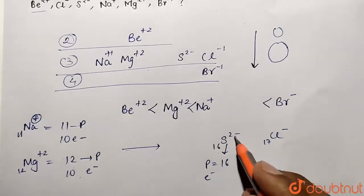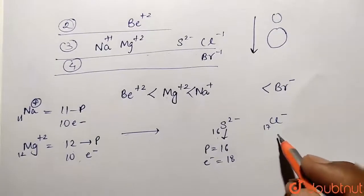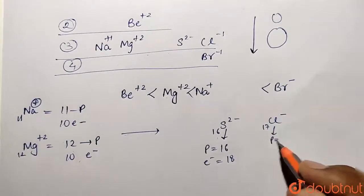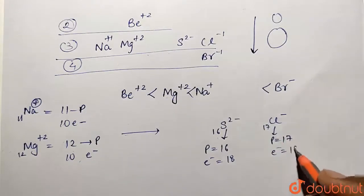Why? Because two extra electrons are there, so this is 18. Similarly, in chlorine ion also, number of protons is going to be 17, but how many electrons are there? Electrons is going to be 18.